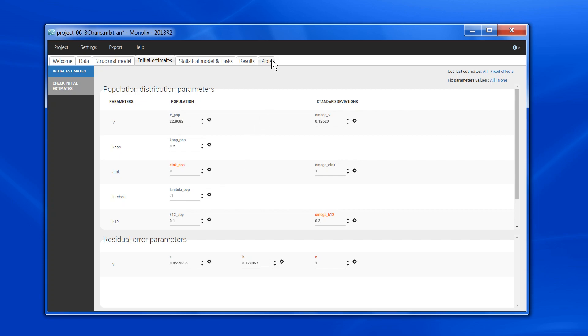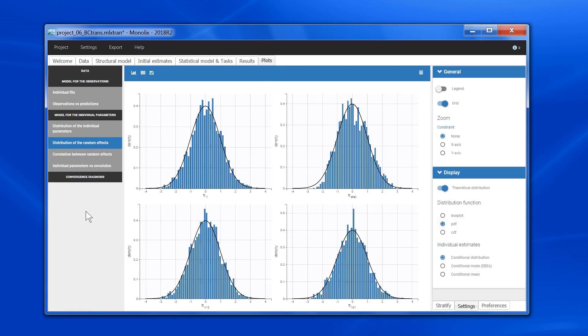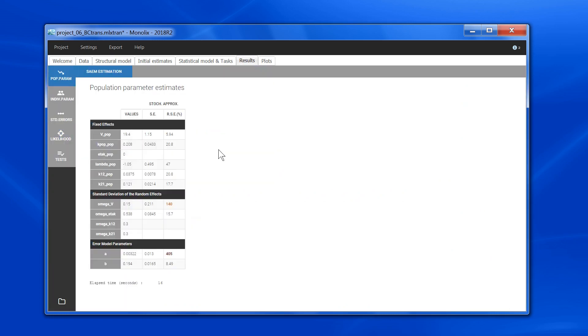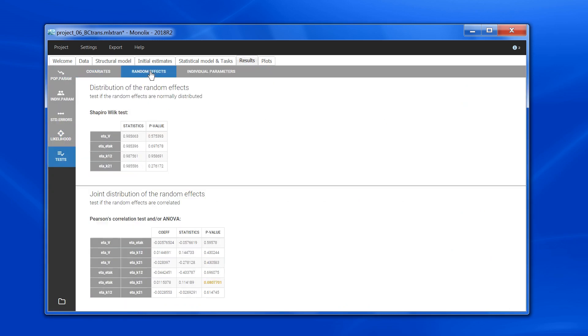If I look at the plots, I now see that it looks much better. For lambda, the distribution of the etas is much closer to normal, and according to the Shapiro-Wilk test in the results, this eta distribution does not significantly differ from a normal distribution, and the likelihood has been improved by 14 points.